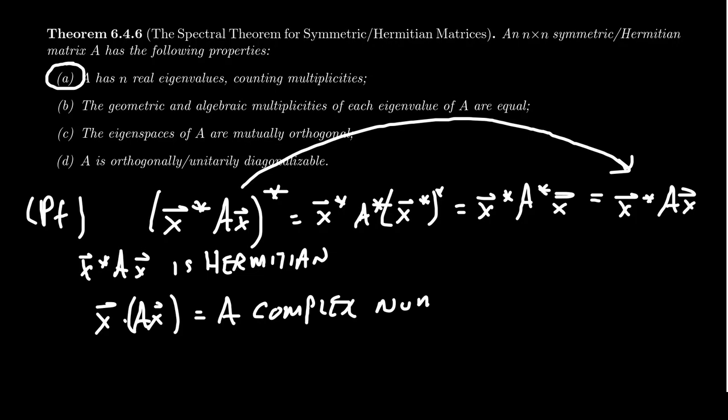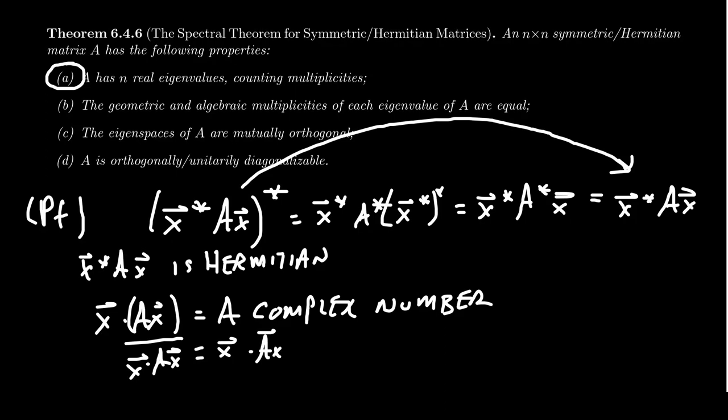When you take the inner product of vectors, it always just gives you back a scalar. So this is just a complex number. And so when you take the star in this situation, the star just gives you conjugation. So this is telling us that X dot AX bar, the conjugate, is just equal to X dot AX, like so. And so that implies that it's in fact actually a real number.